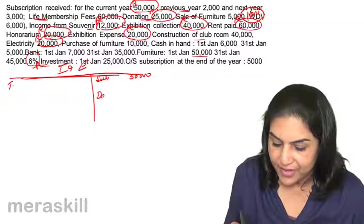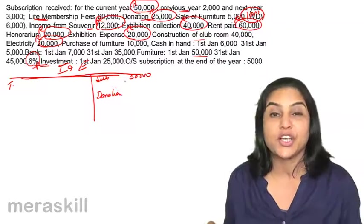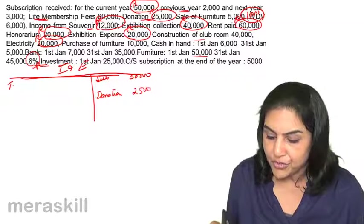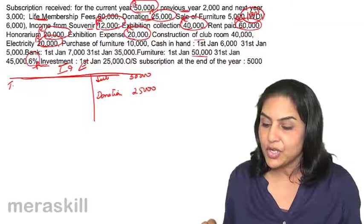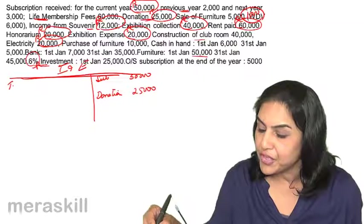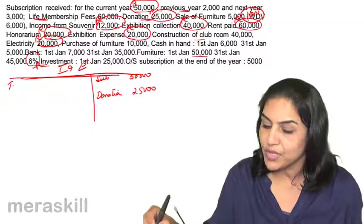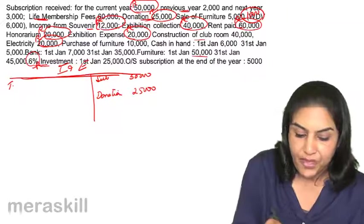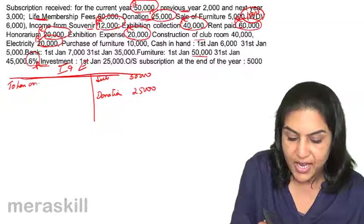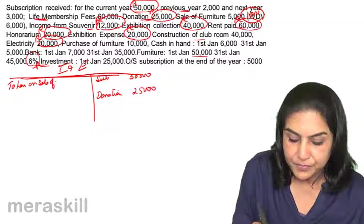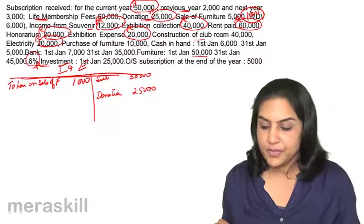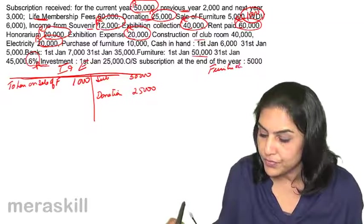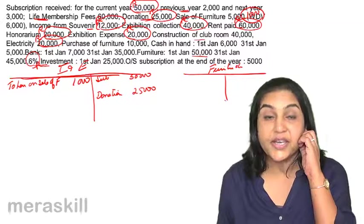Let us take donation — we have 25,000. For sale of furniture, we've written 1,000. What is 1,000? We received 5,000 but the book value was 6,000, therefore there was a loss — loss on sale of furniture of 1,000. We need to prepare a furniture account also to check if there is any depreciation.